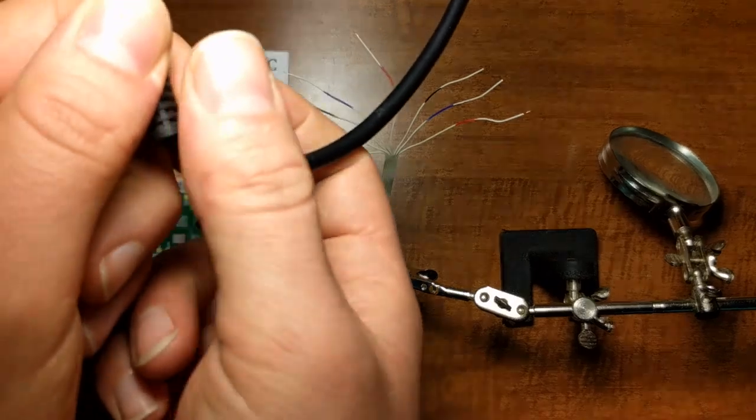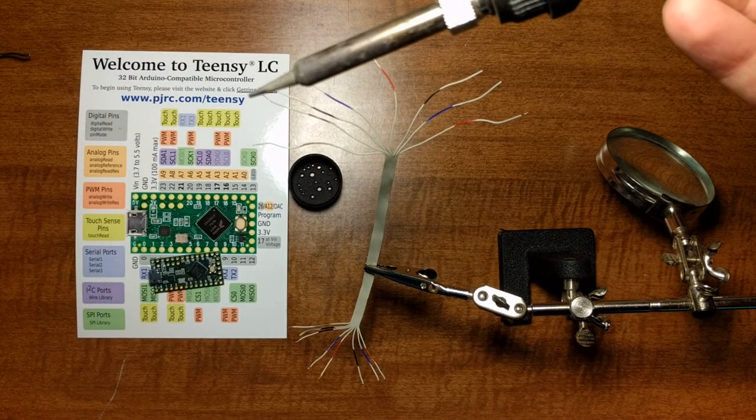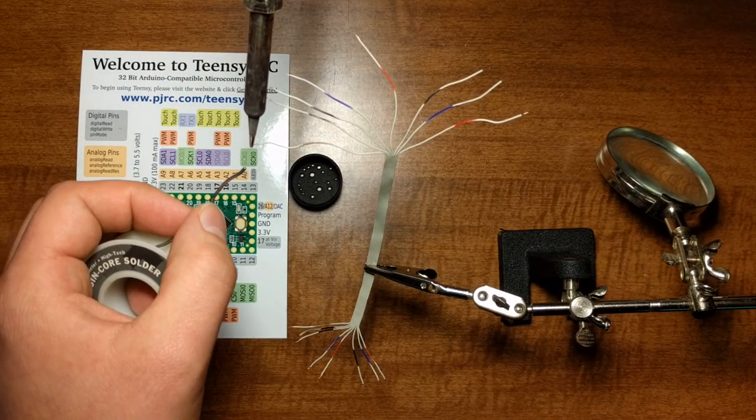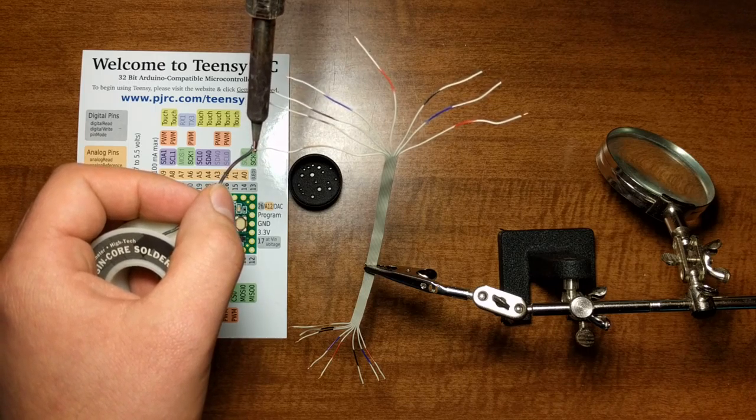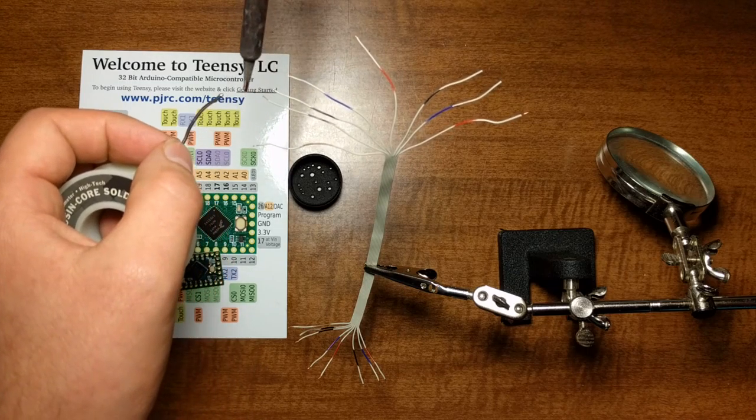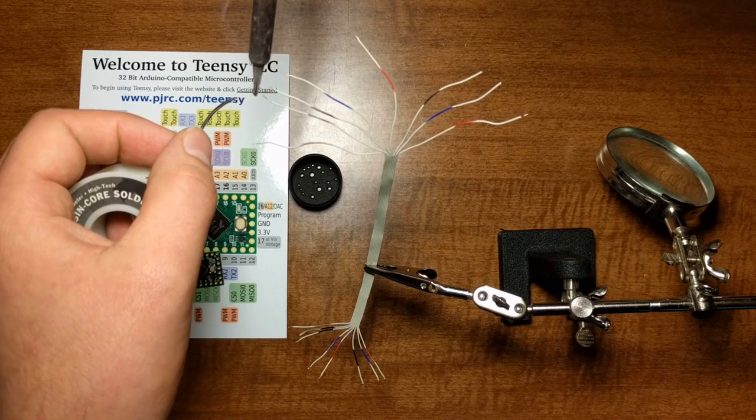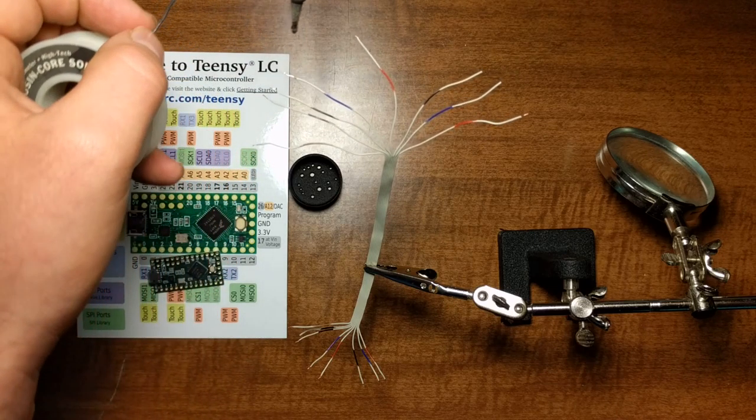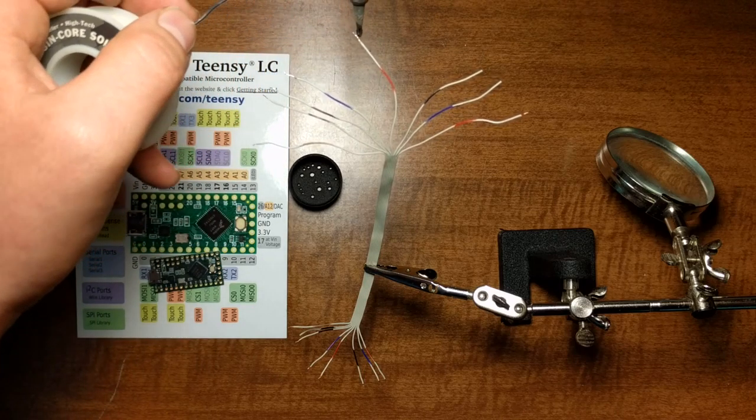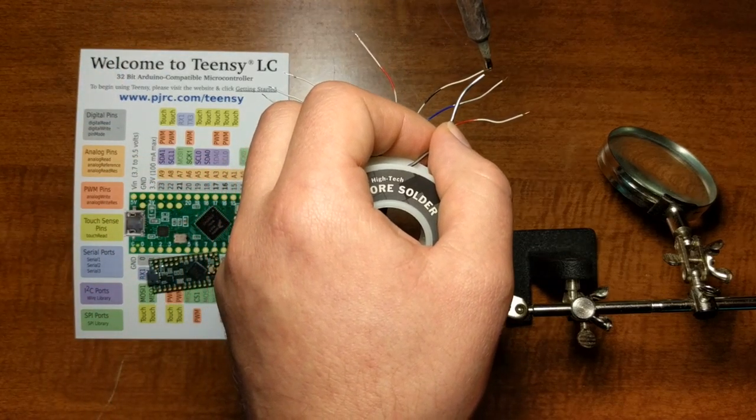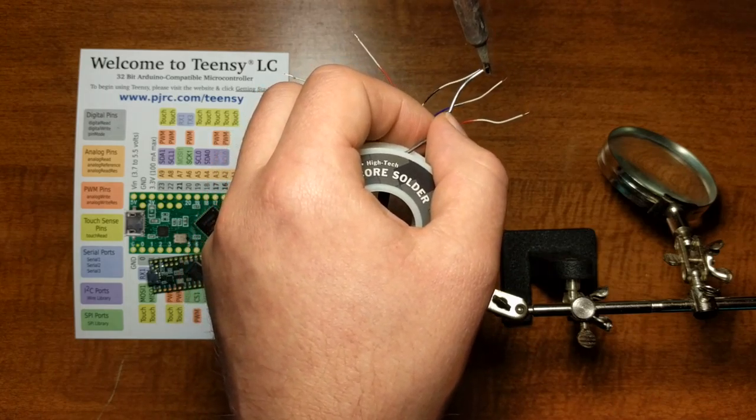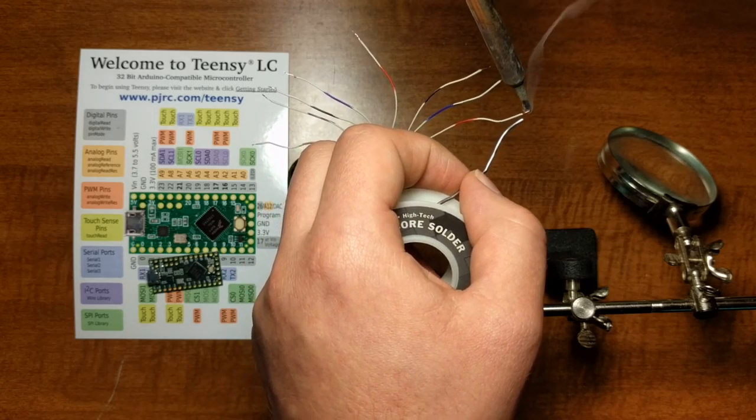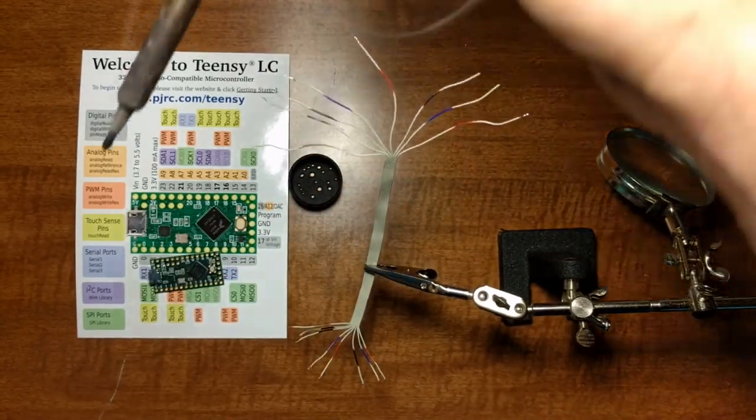I'm going to start by tinning the wires here. And we're going to see how the camera does with this. So I'll just clean the tip. It's been sitting there hot. I'm just going to go around as quick as I can before I need to clean it again. We're just tinning the wires here. That's it. Don't overthink it.